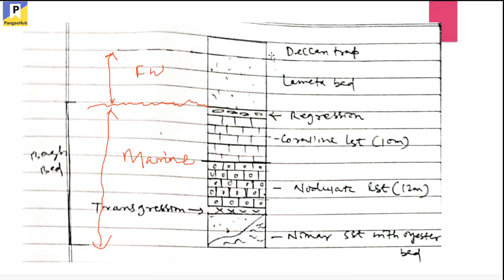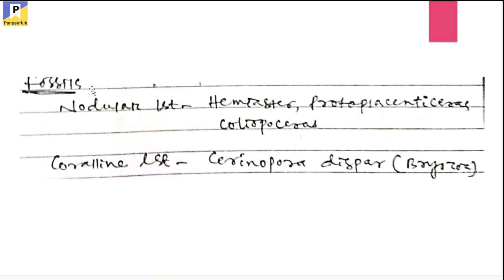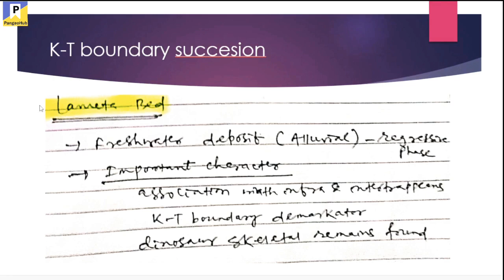The Lameta Bed is overlaid by different Deccan lava flows. In the Bagh Bed nodular limestone, different fossils such as Hemiaster, Protoplacenticeras, and Poliopaceras are found. In the coralline limestone, different bryozoans such as Ceriopora disparata are found. The Lameta Bed is a KT boundary demarcator — it demarcates the Cretaceous-Tertiary boundary. During this KT boundary period, the extinction of dinosaurs also happened, and this succession belongs to that period of time.